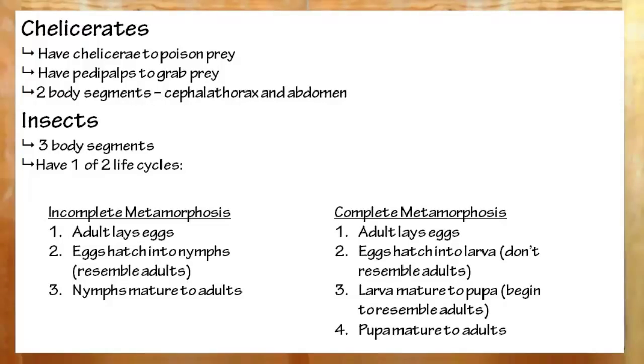Complete metamorphosis. The adult lays eggs. The eggs hatch into larva. Do not look like the adult. The larva turns into a pupa. This is where internal changes occur, and it becomes like an adult. Finally, the pupa matures into an adult.